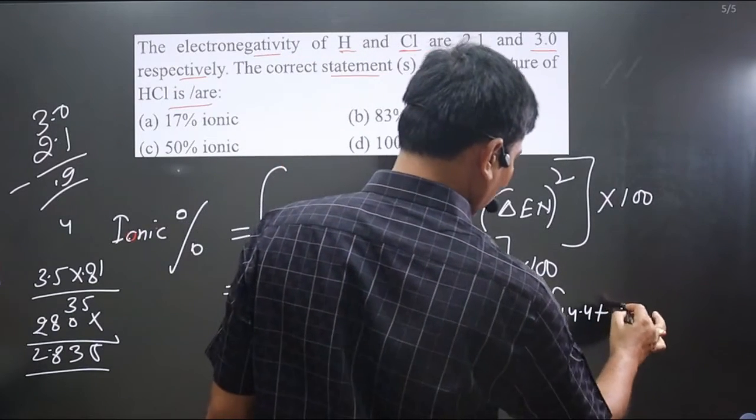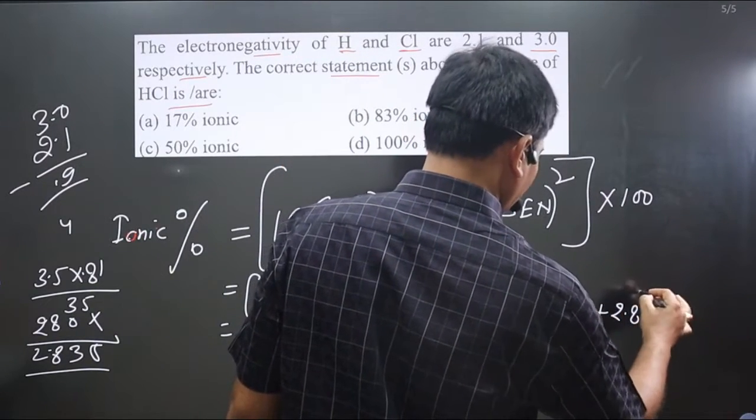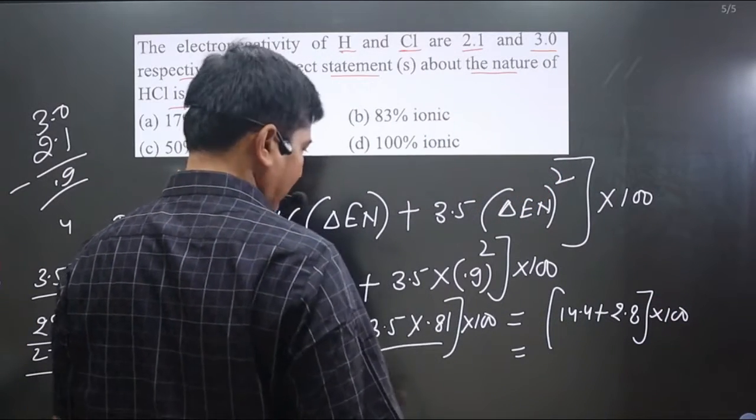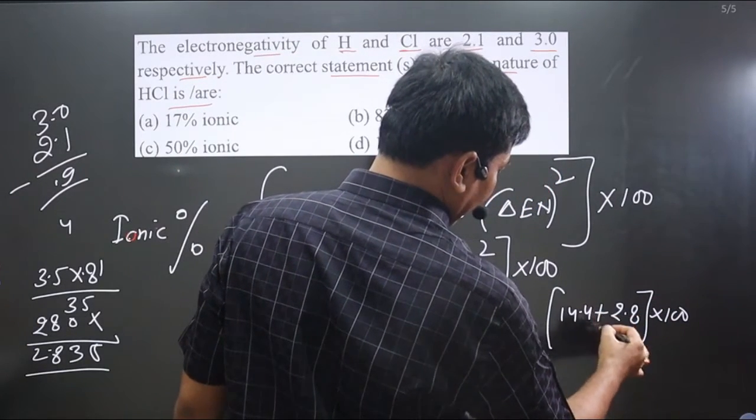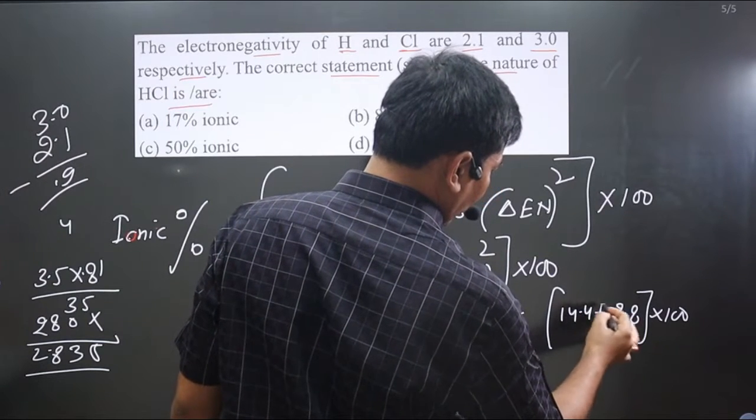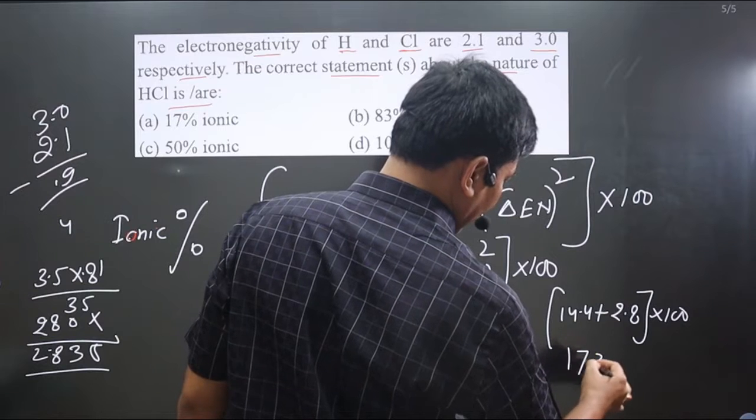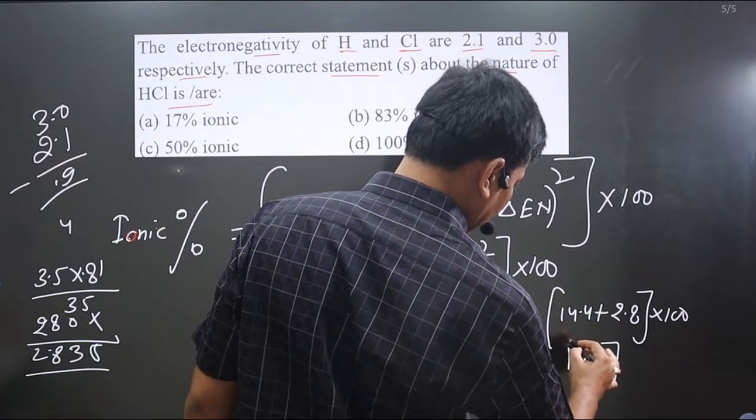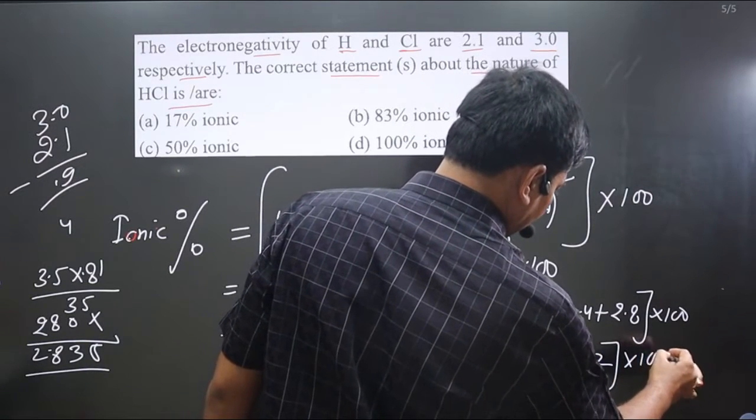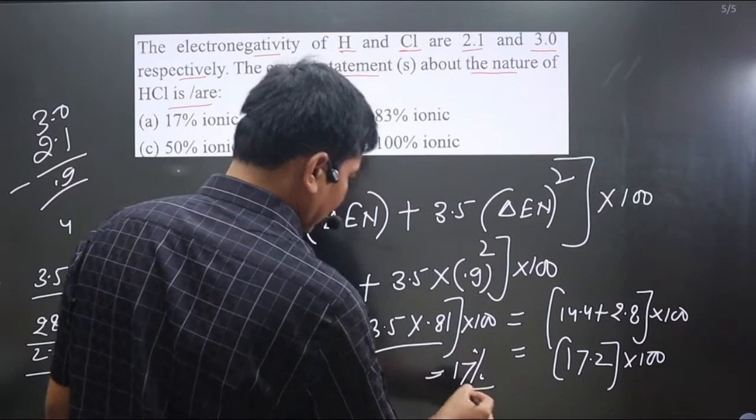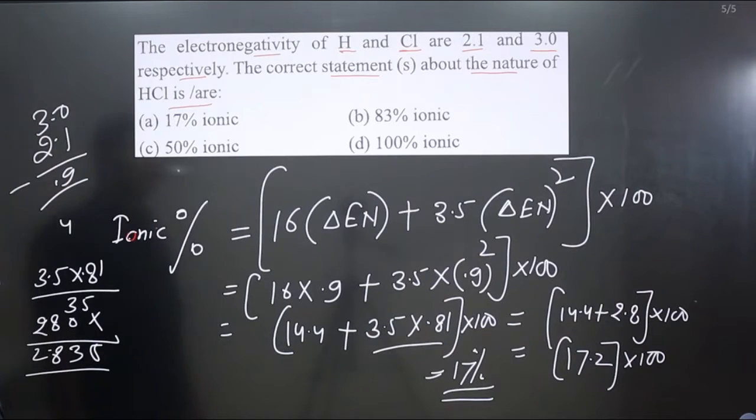Rounding off the figure and multiplying by 100: adding 8 and 4 gives 12, carry the 1, so we get 17.2. Multiplied by 100, the value is 17 percent. You can see 17 percent option is correct.